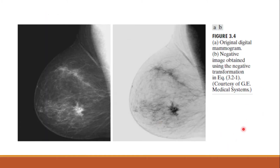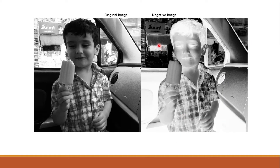An example of image negative is shown with a digital mammogram displaying a small lesion or tissue damage. When you apply the image negative, this lesion is easier to see and detect compared to the original image — that is the application of image negative. When implemented in MATLAB, the original image produces a complement image where the black portion becomes white and the white portion becomes black.